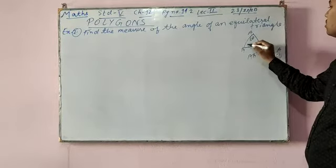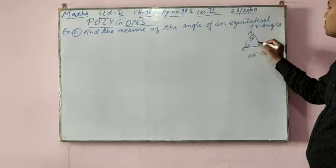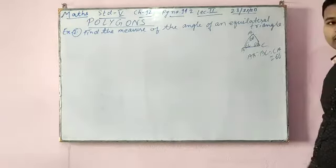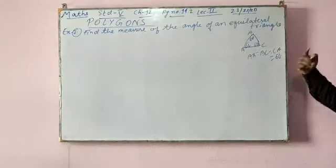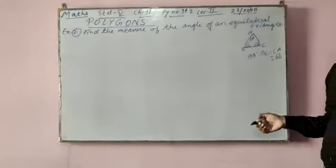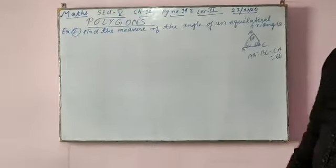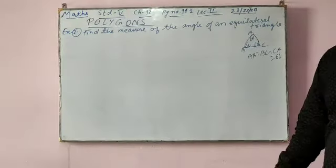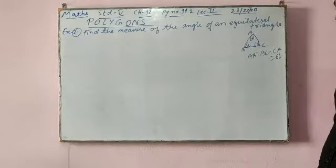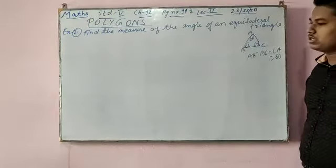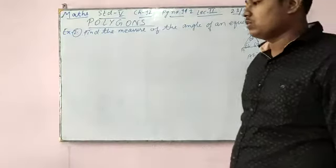Each angle would be 60 degrees. And one type is the isosceles triangle. In an isosceles triangle, only two sides are equal and one side is unequal, but in an equilateral triangle, all sides are equal.